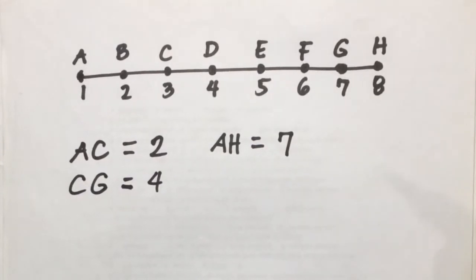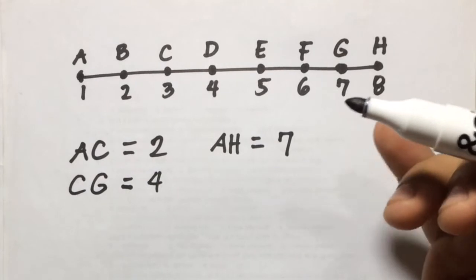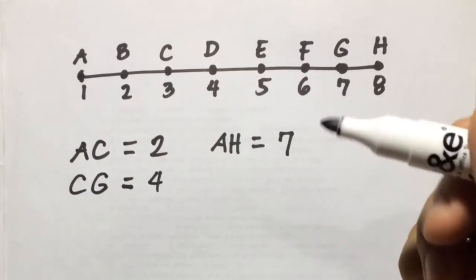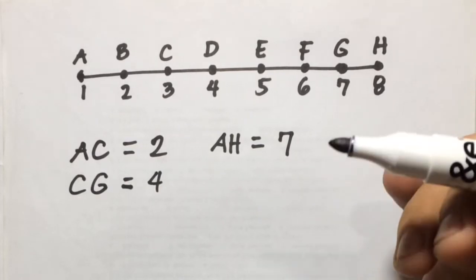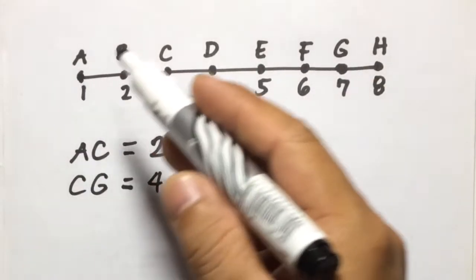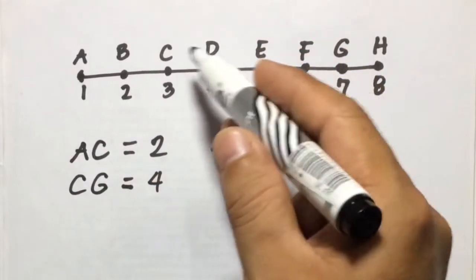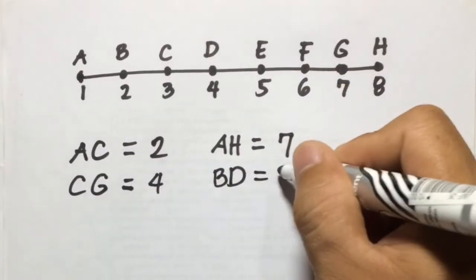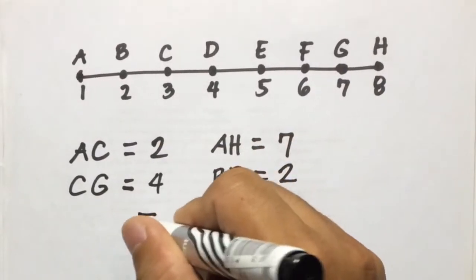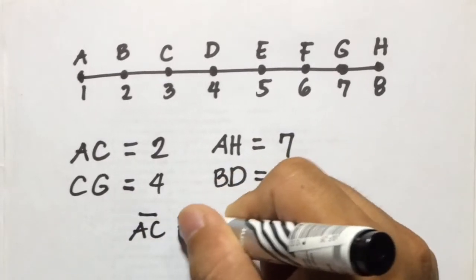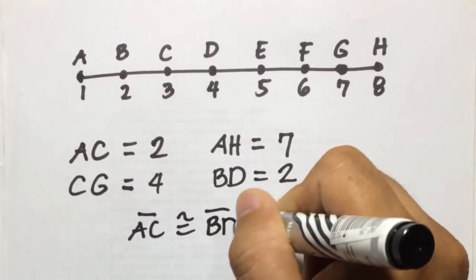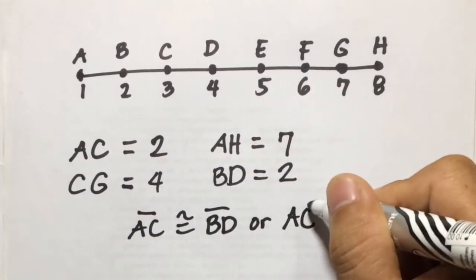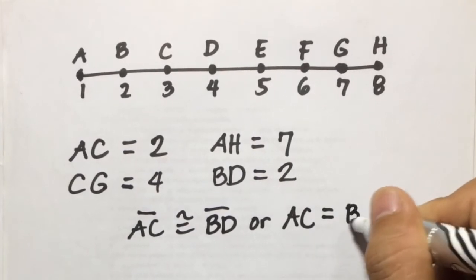If two segments have the same or equal measurement, we say those segments are congruent — they have the same measure. For example, line segment BD is two units. So we can say line segment AC is congruent to line segment BD, meaning the measure of AC equals the measure of BD.